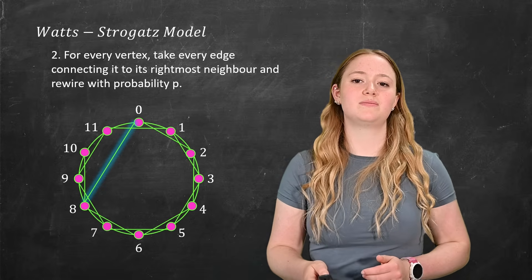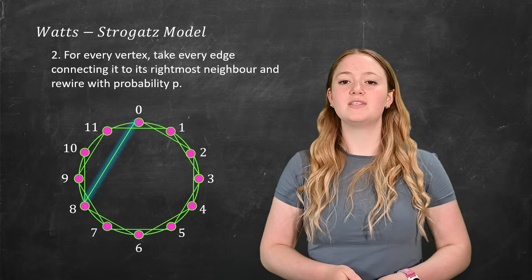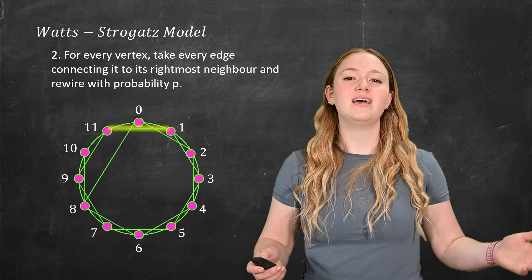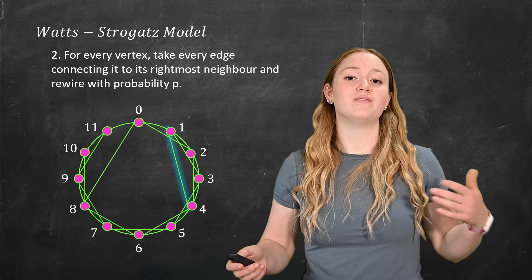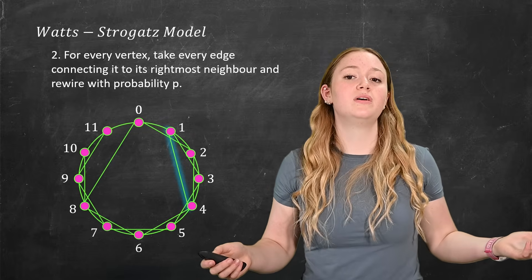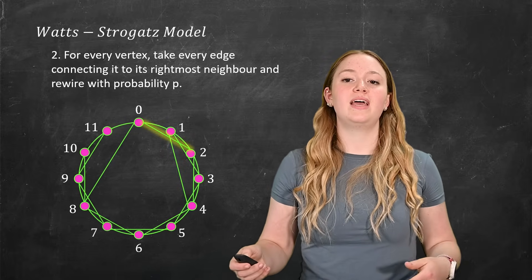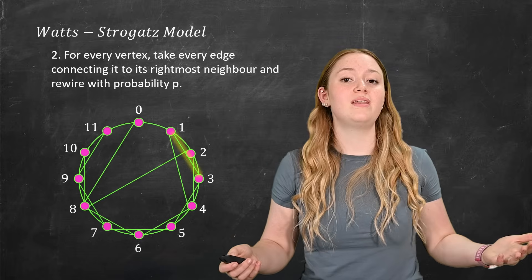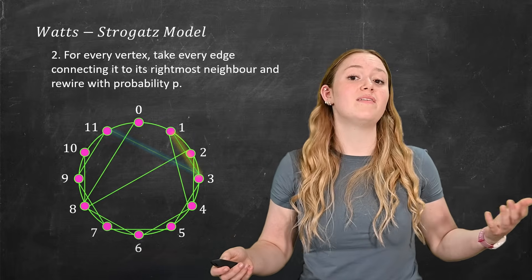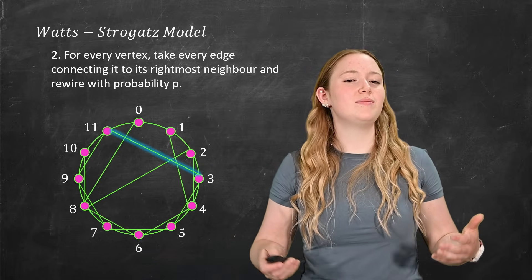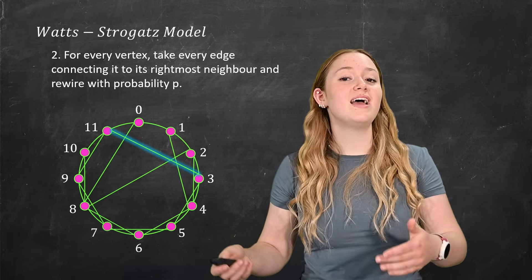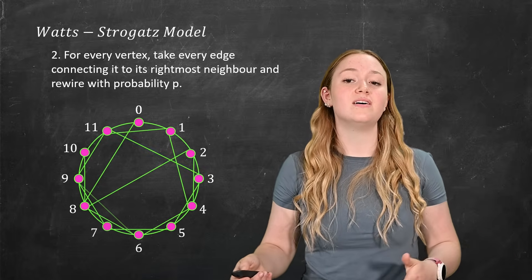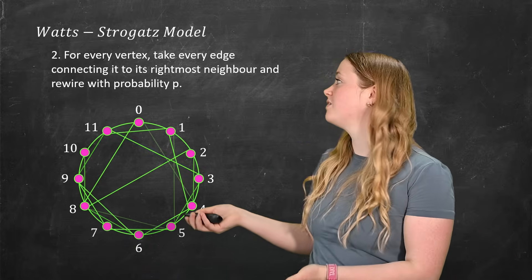Before I explain any more, it might help to do some more examples. Let's take one. So we've got one 11 and rewires it to one four. Now let's take two. We'll take two zero and rewire it to two eight. And we'll take three. So we've got three one and rewire it to three 11. So we kind of keep going on and on and on with every single vertex until we have something that looks sort of like this.